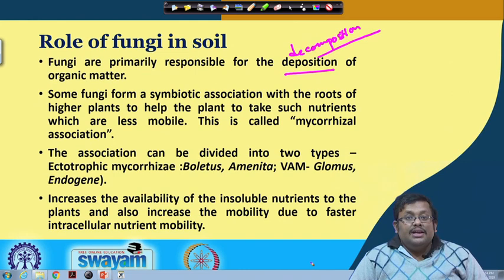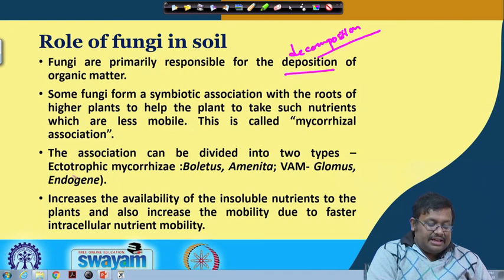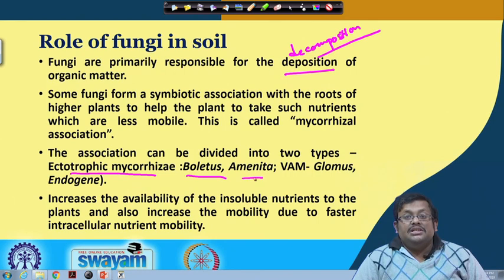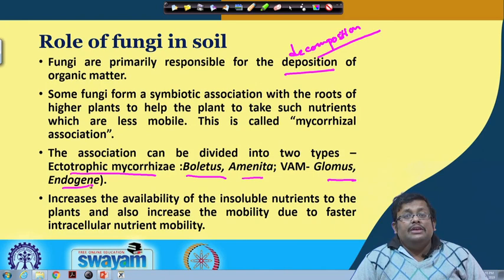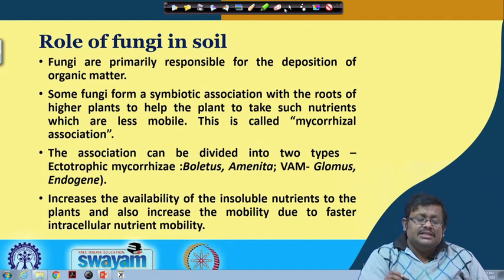I have already covered VAM in our phosphorus lecture. The mycorrhizal association can be divided into two types: ectotrophic mycorrhizae, examples being Boletus and Amanita, and VAM (vesicular-arbuscular mycorrhizae), examples being Glomus and Endogone. These fungi increase the availability of insoluble nutrients to plants and also increase nutrient mobility, making them indispensable for maintaining soil fertility.